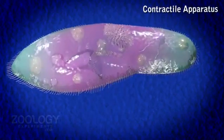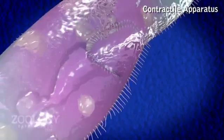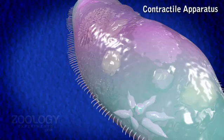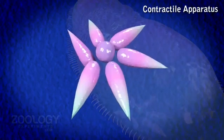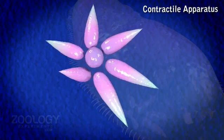Contractile apparatus. In Paramecium, there are two contractile vacuoles occupying somewhat fixed position in endoplasm. One vacuole lies near each end of body, close to the dorsal surface.